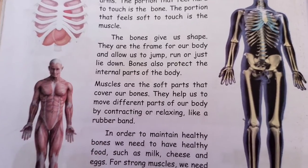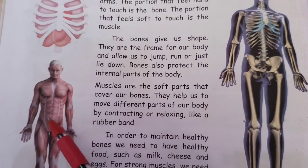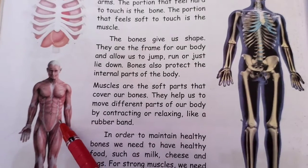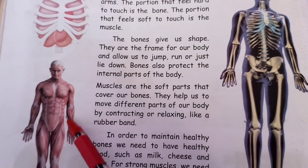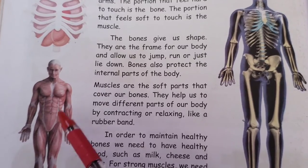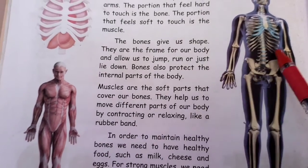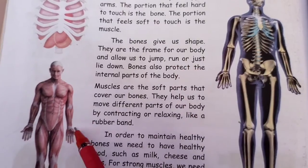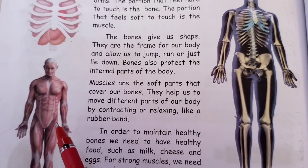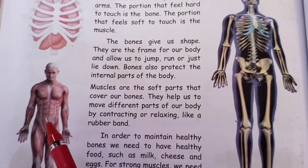The muscles help us to move the different parts of our body. They help us to move the internal organs and also the external organs. For example, organs such as hands and legs can move with the help of the muscles. So the bones and muscles give proper shape and structure to our body. Thank you students.